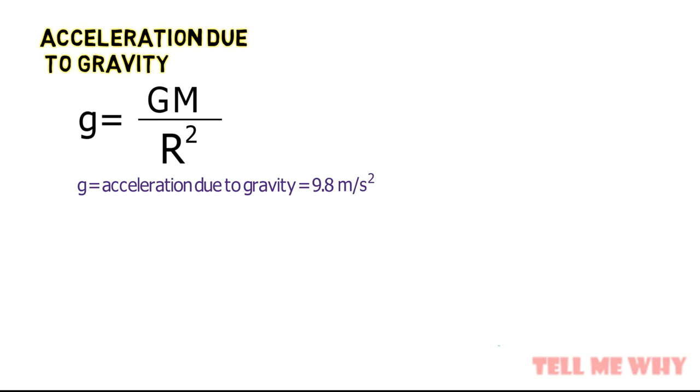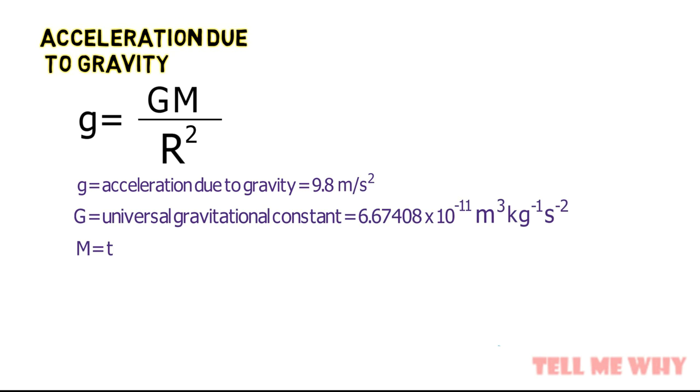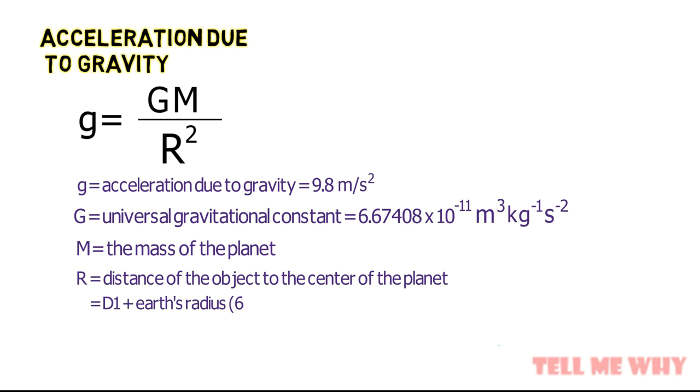The acceleration due to gravity on any planet is given by this equation, where g is the acceleration due to gravity, G is universal gravitational constant, M is the mass of the planet, and R is the distance of the object to the center of the planet. In our case, we need to determine the mass of the Earth.